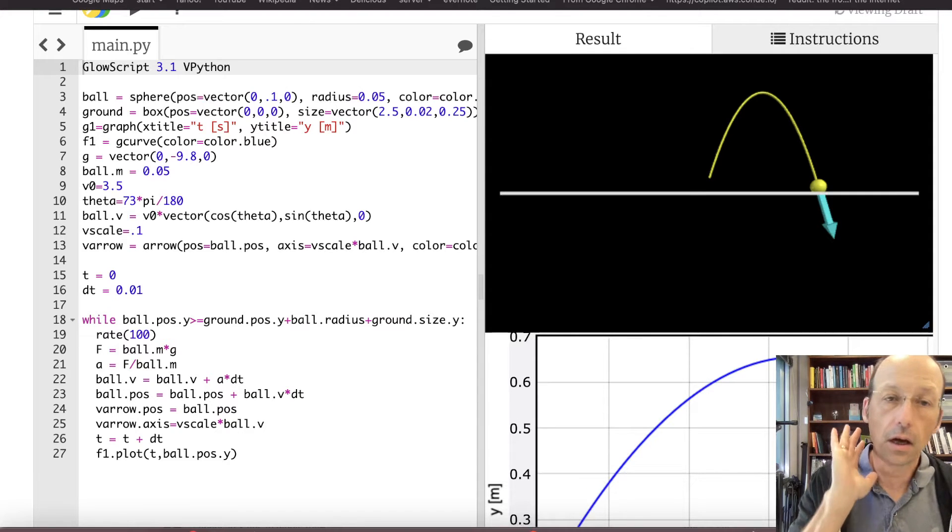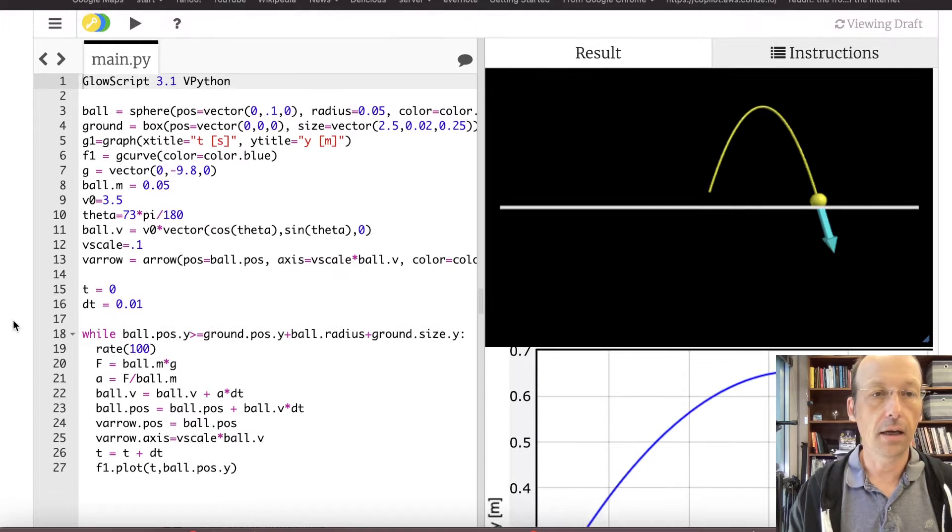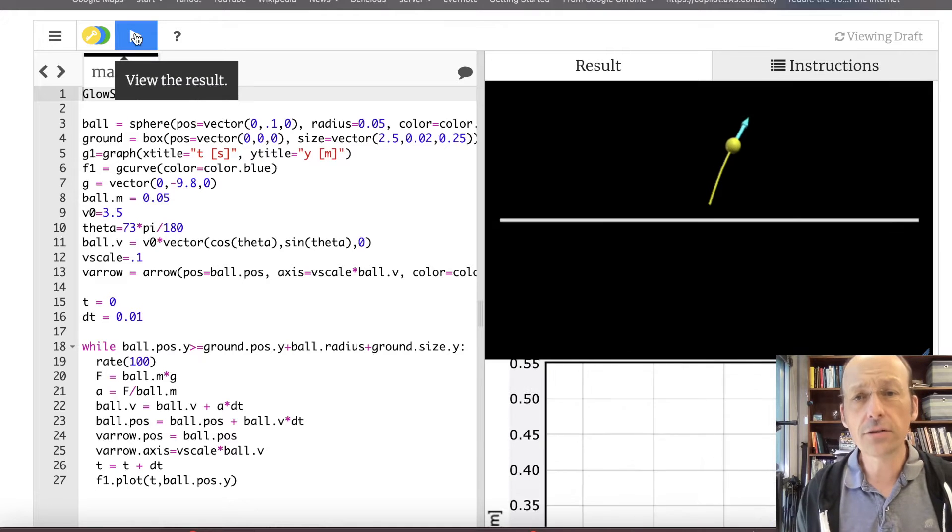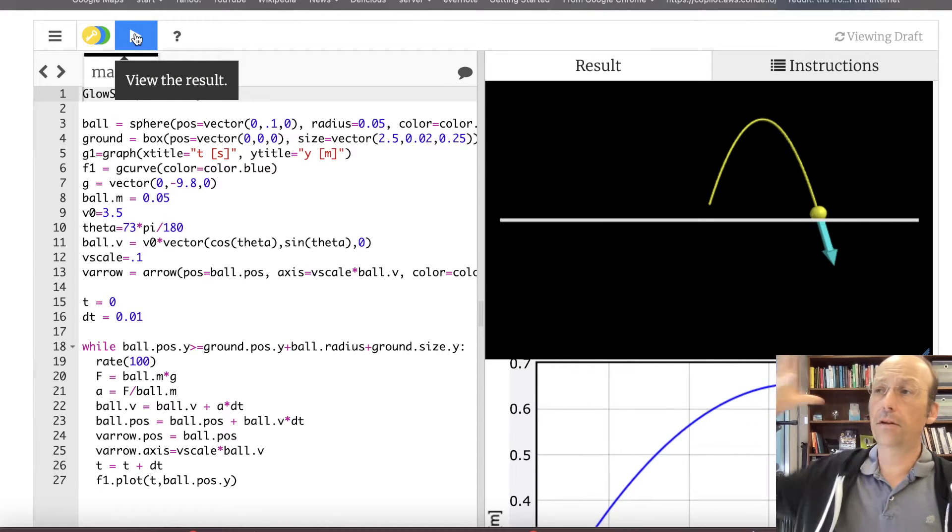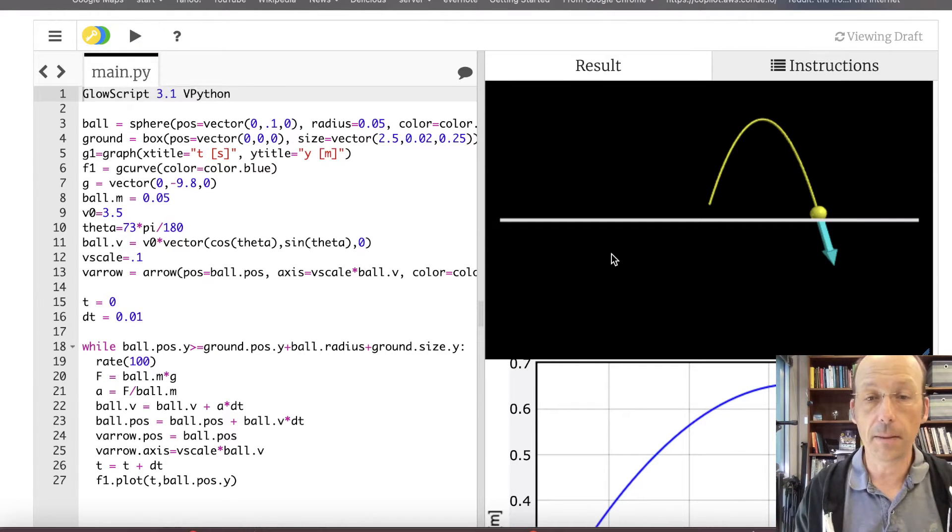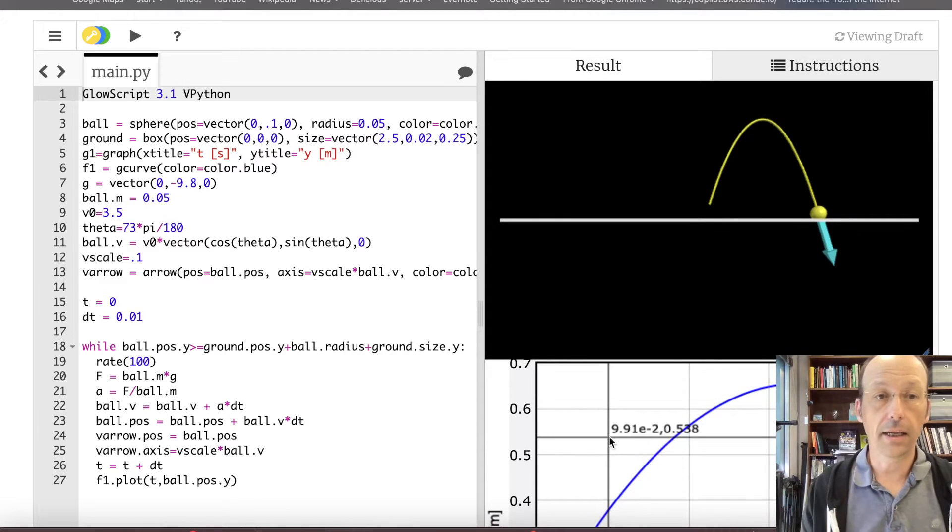I'm using GlowScript vPython in Trinket. Let me just run this program again so you can see what it looks like, and we're going to change this program. So this is my model for a tennis ball that's thrown in the air. The cyan arrow's the velocity. And then I make a graph of position versus time in the y direction.